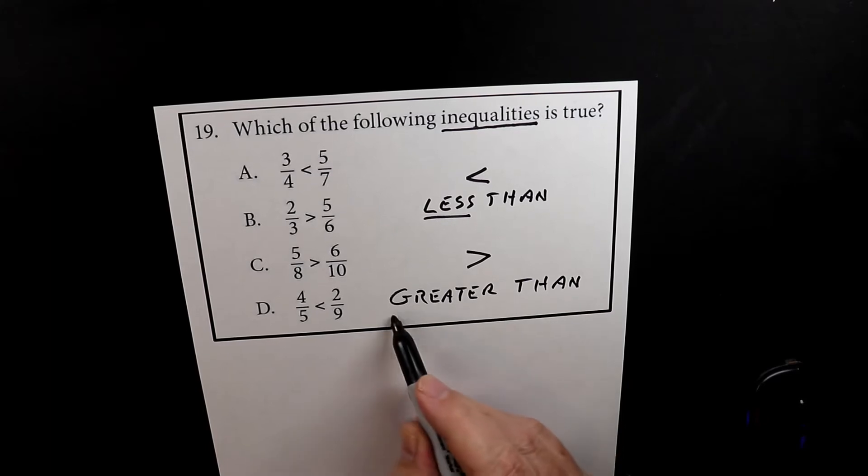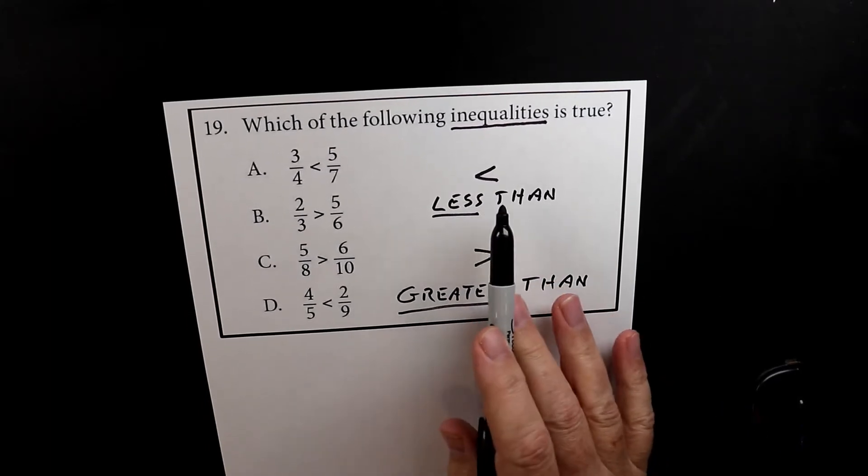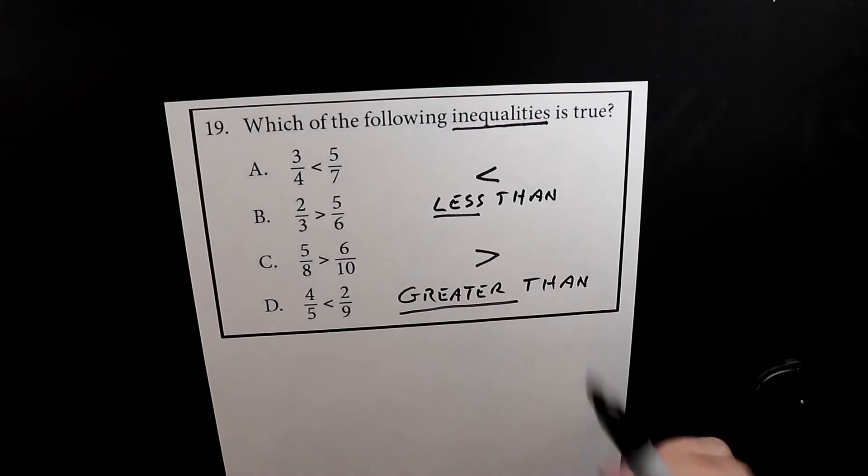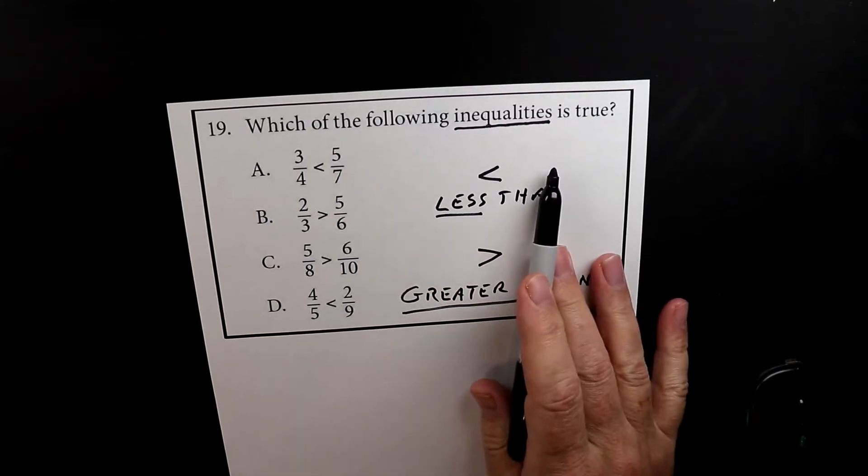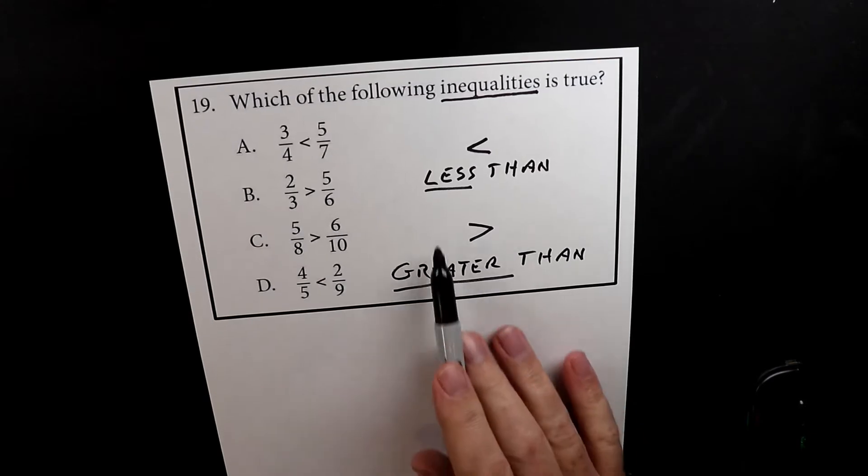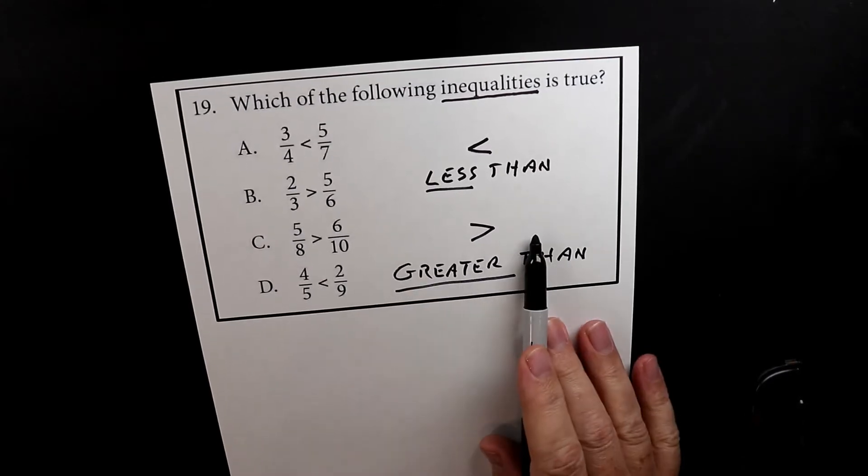So just for a quick review, this is a comparison. We're comparing one thing to another. A nickel is less than a dime. A quarter is greater than a penny.